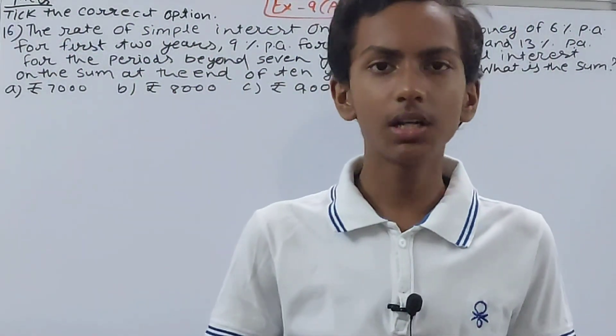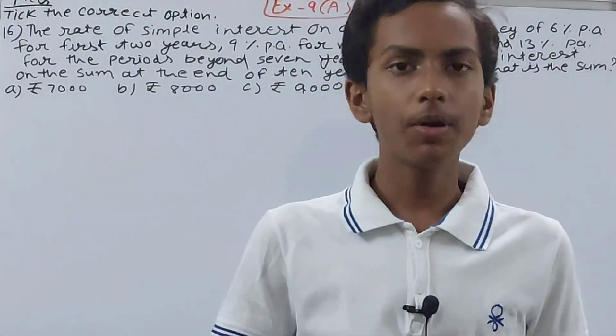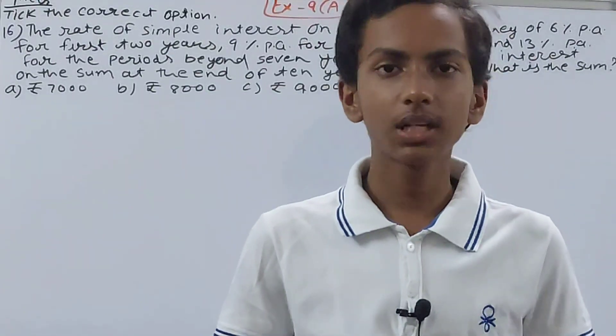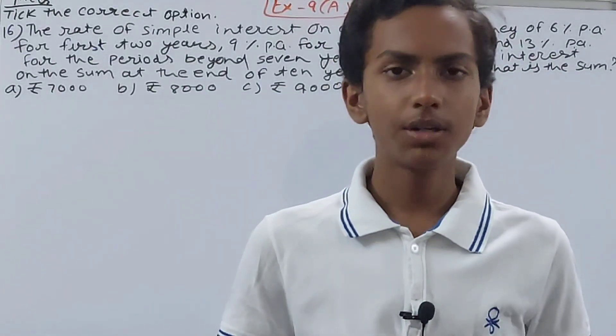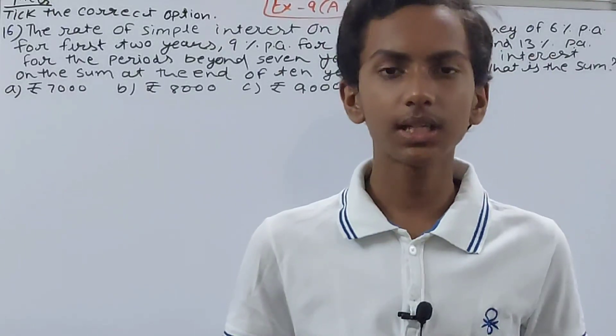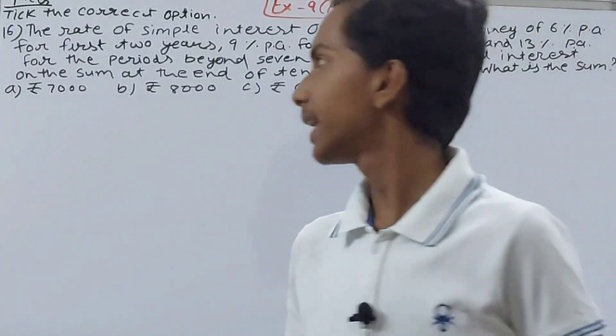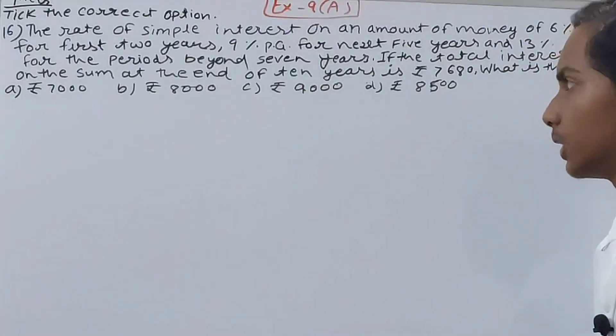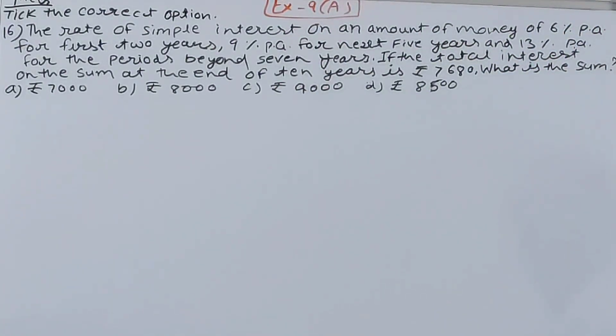Hello friends, welcome back to my YouTube channel Lock Your Learning. In this video, we are going to solve ICIC Mathematics Class 8, Chapter 9 Simple Interest and Compound Interest, Exercise 9A, Question Number 16. The question asks: the rate of simple interest on an amount of money is 6% per annum for the first two years, 9% per annum for the next five years, and 13% per annum for the periods beyond seven years.